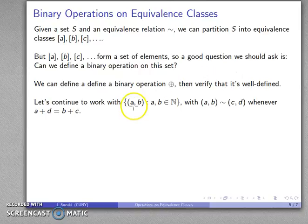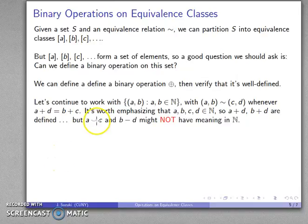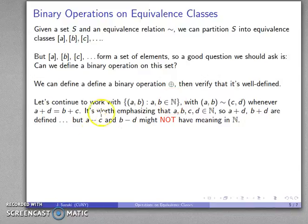Let's work with ordered pairs in N² with the equivalence relation (A,B) ~ (C,D) whenever the outer sum A+D equals the inner sum B+C. It's worth keeping in mind that A, B, C, and D are all natural numbers, so A+D, B+D, B+C are all defined. However, things like A−C or B−D might not have meaning in the natural numbers. That's why we define the relation using addition, since adding two natural numbers is always possible — we don't want to use subtraction, which might not be defined.